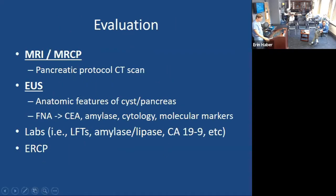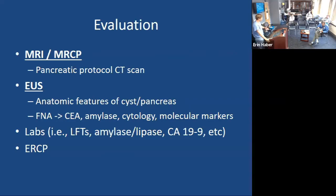For evaluation, most of these are picked up with either an MRI or a CT scan. In clinical practice, things are never as cut and dry — there's a lot of gray area. Sometimes you need further investigation, such as an EUS, to steal some tissue or fluid and get a little more information.